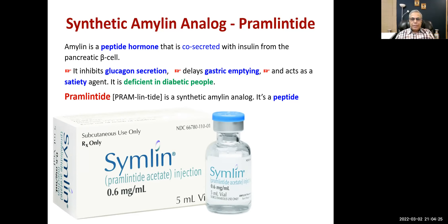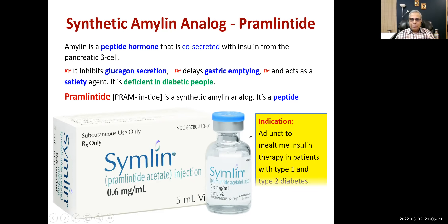Peptides are not given orally because they are destroyed in the stomach. However, there are exceptions: vancomycin is a glycopeptide antibiotic given orally precisely because it is not absorbed. Others like teriparatide (an analog of parathyroid hormone), octreotide, and calcitonin are peptides used clinically, but most of them are given subcutaneously. Pramlintide's indication is as adjunct to mealtime insulin therapy in type 1 and type 2 diabetes.